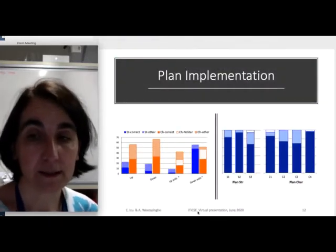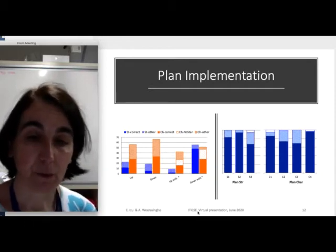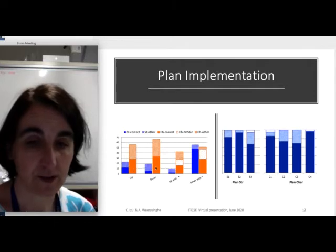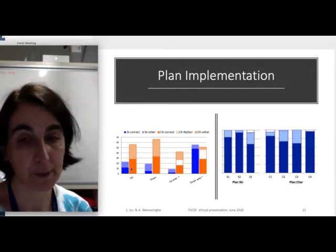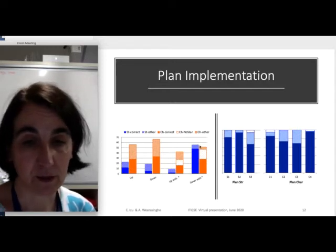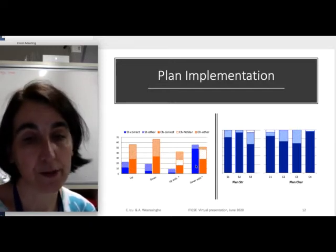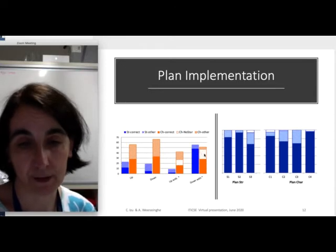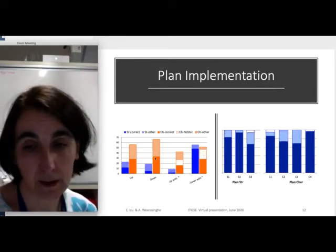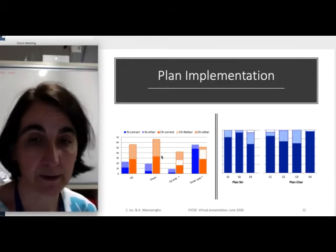So when we look at plan implementation, we can see that on the first three variations, most students implemented the character plan and only on the last variation, the down with the star, there was a similar number of students choosing each plan. And on average half of them were incorrect.